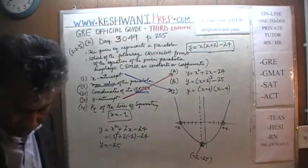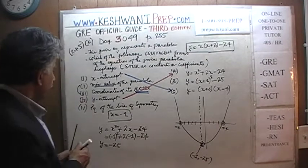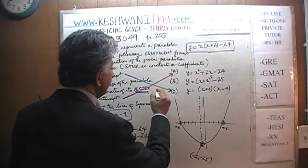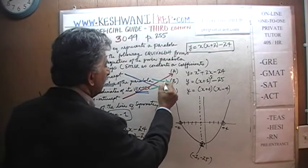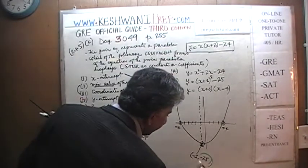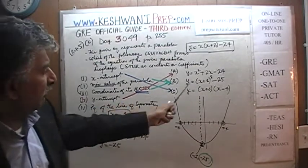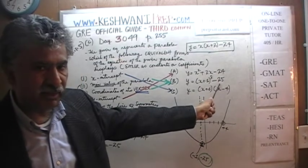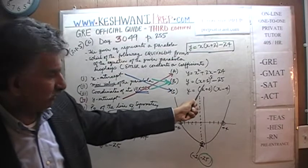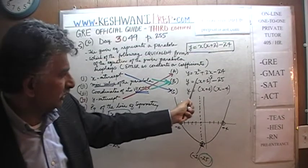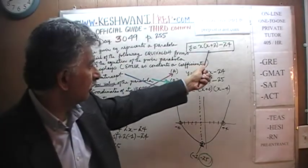The coordinates of the vertex, (−1, −25), are found by form B. Similarly, the minimum value of the parabola is −25, also found from form B. The minimum value of the parabola is −25, and it occurs when x = −1. Now the question is: how do we go from the expanded form to the vertex form directly? Let's find out.